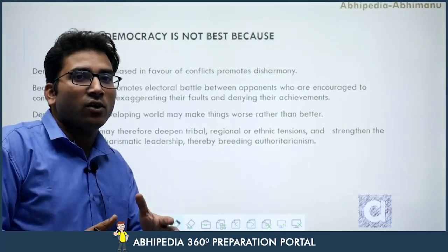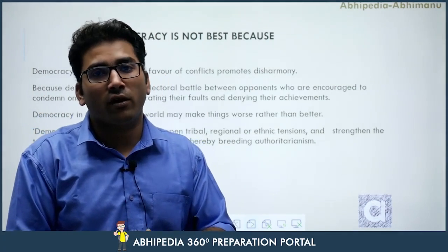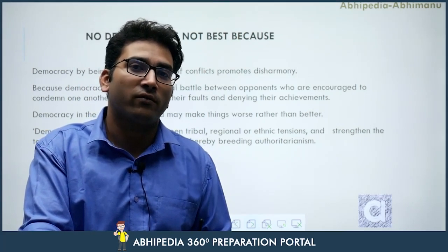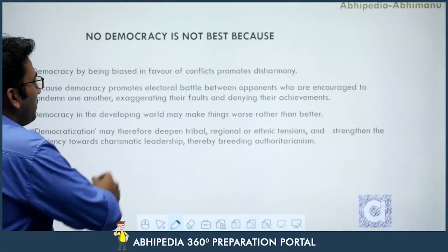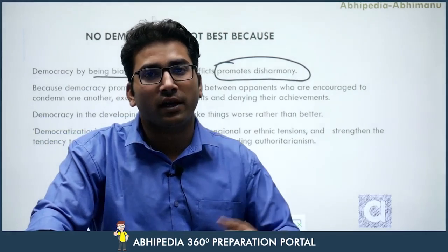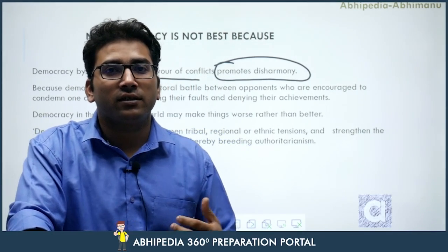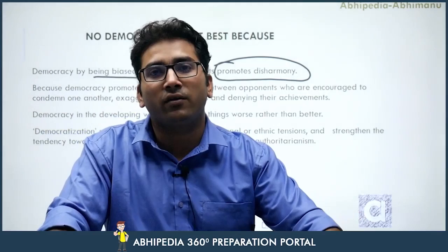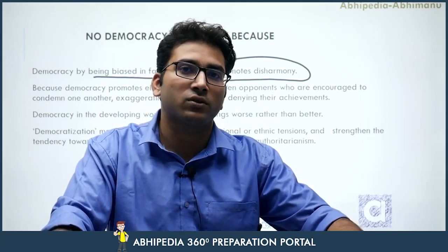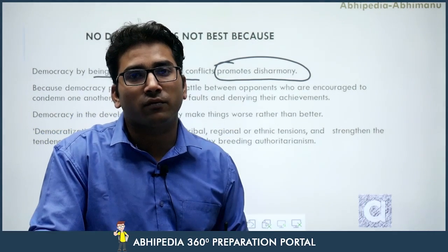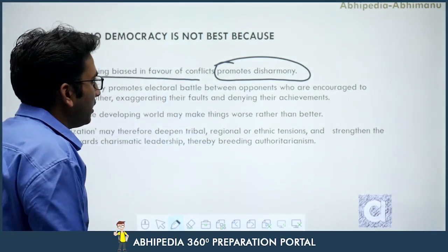Now, looking at the other side of the coin — reasons for considering democracy as not the best form of government. First, democracy is biased in favor of conflicts and promotes disharmony. It is criticized by philosophers like Karl Marx, who says the government is the machinery of the bourgeoisie or capitalist class, taking the interest of the dominant class — whether through caste, region, or communal interest. It often promotes the interests of the dominant section and creates disharmony.